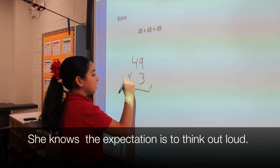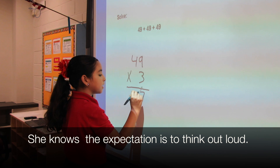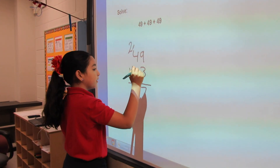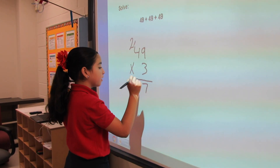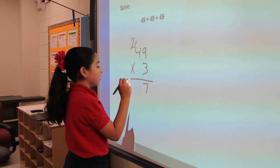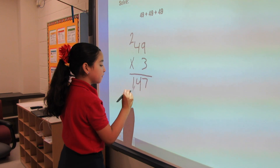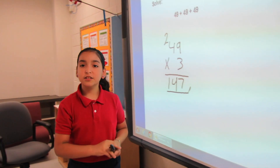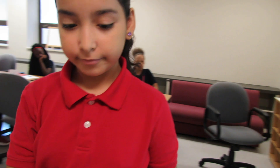I know that 9 times 3 is equal to 27. Then 4 times 3 is 12. 12 plus 2 more — 14. 147 was my answer. Thank you. I like the way you talked in complete sentences.